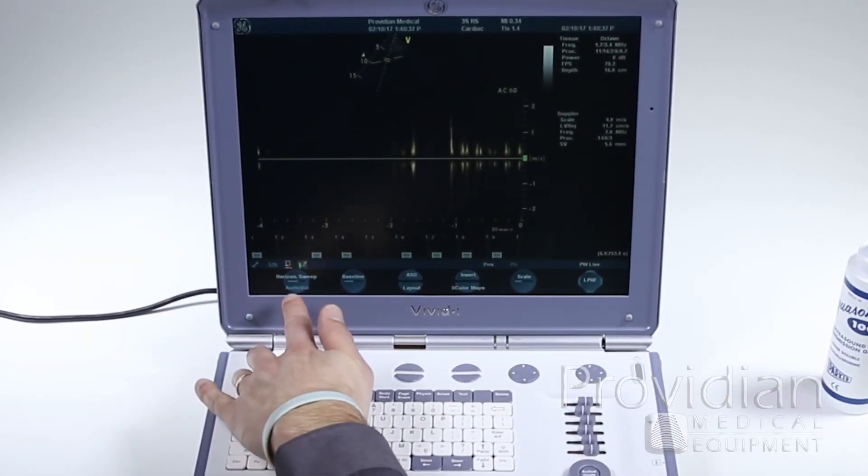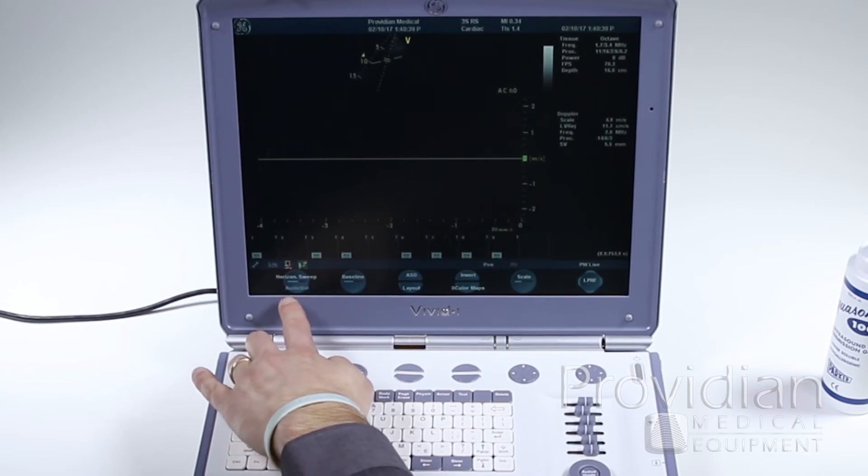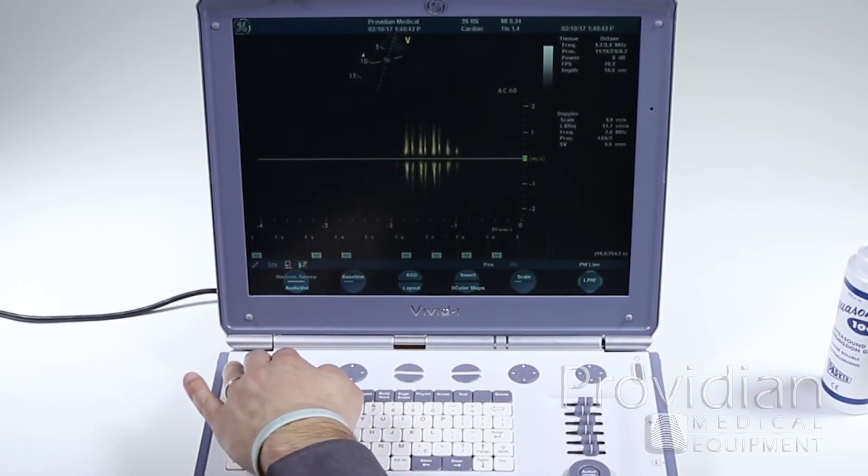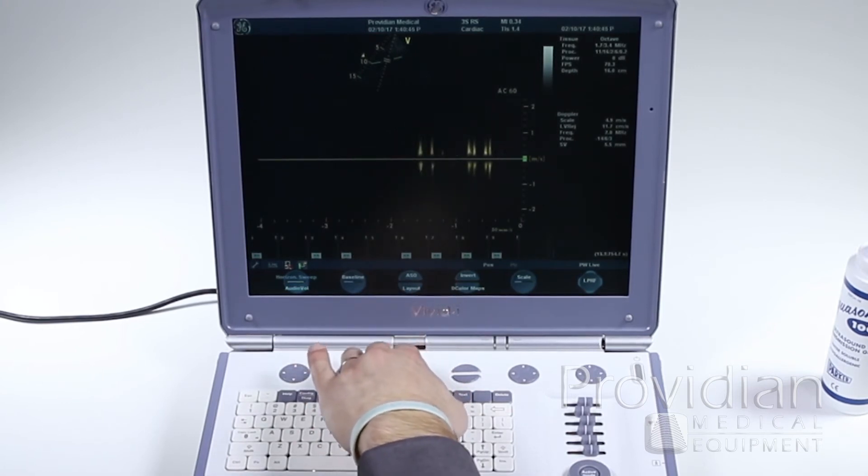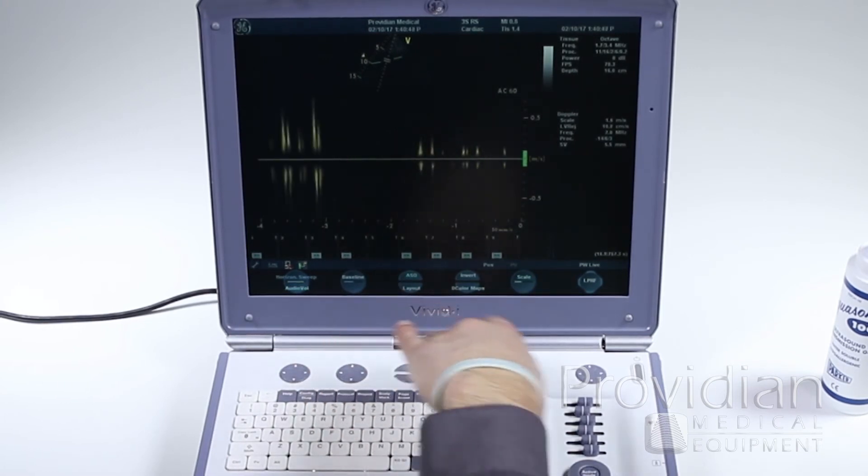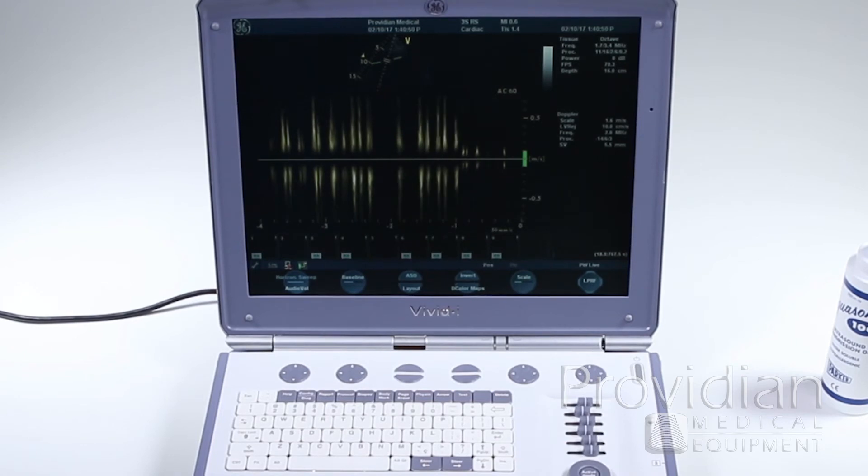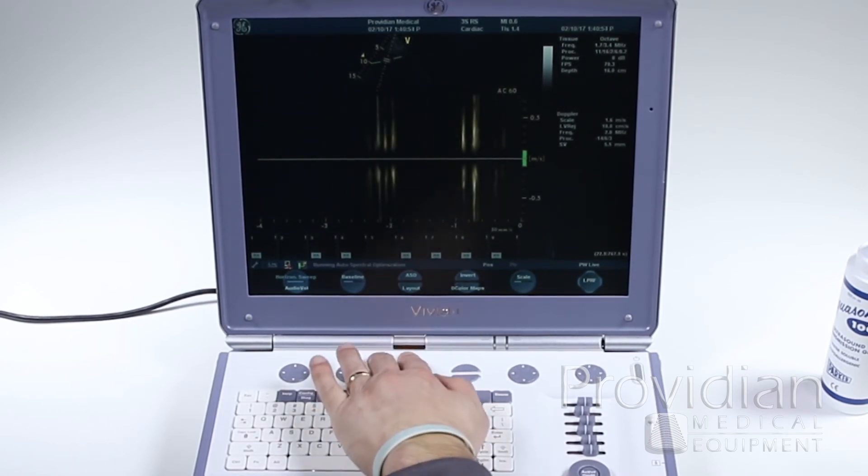Again, you have multiple functions down here for the sweep speed, the volume of your Doppler, change your baseline. ASO is auto spectrum optimization, so if I click on that, it's going to try and adjust the scale and everything to what it thinks I am looking at each time I press that.